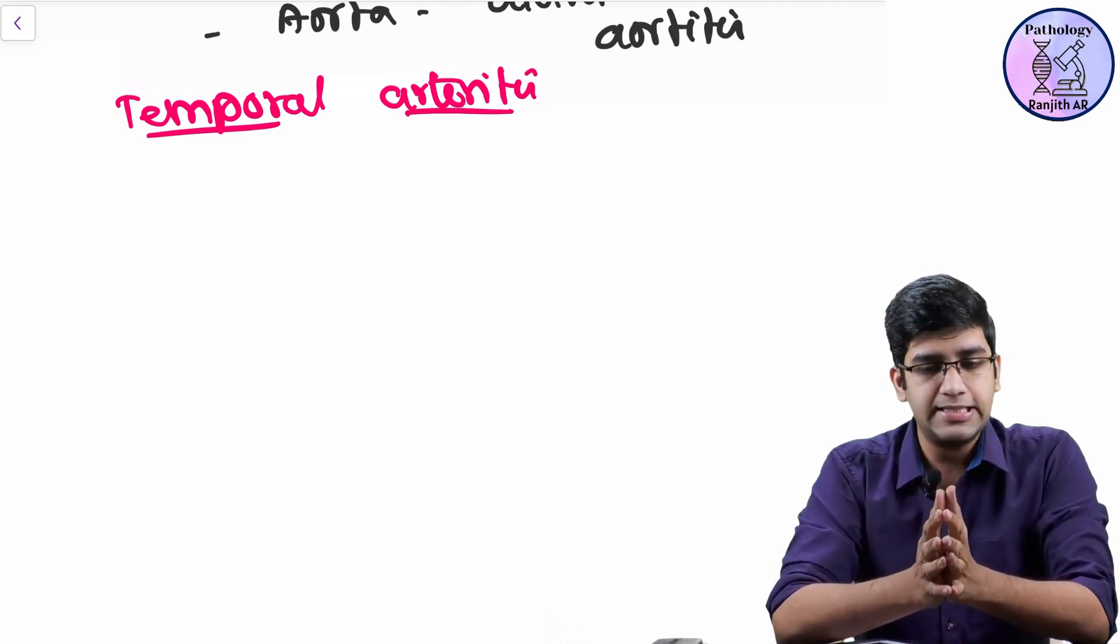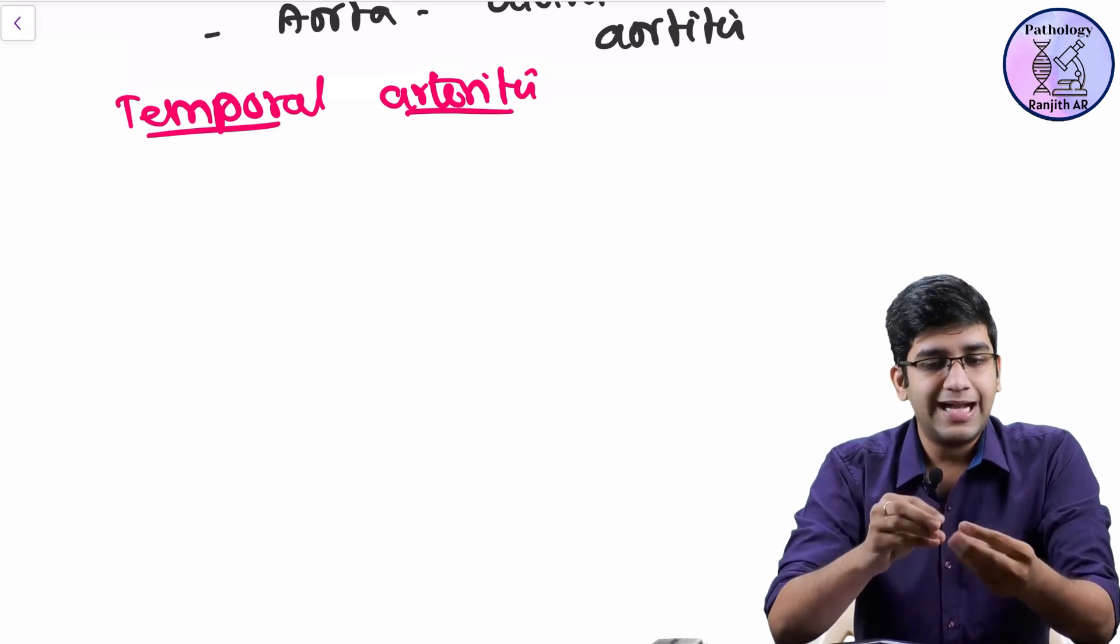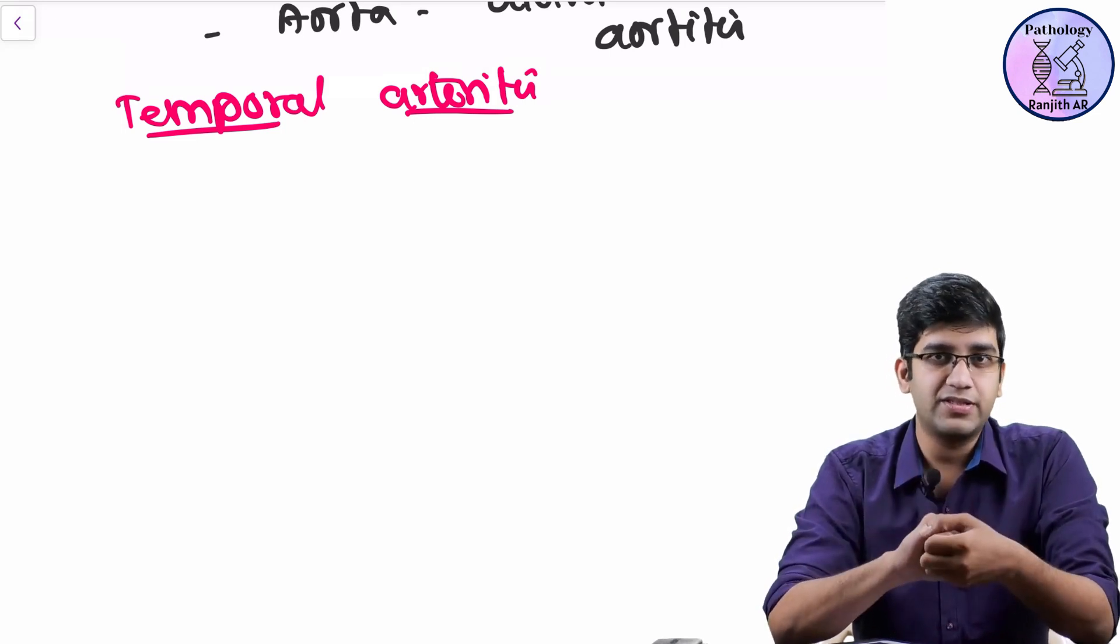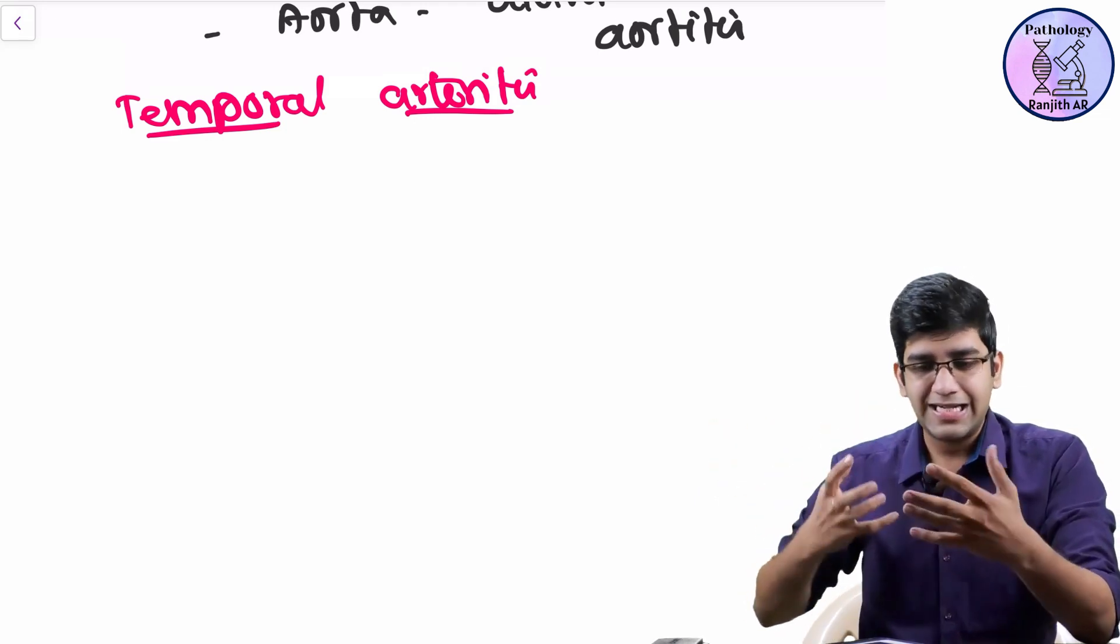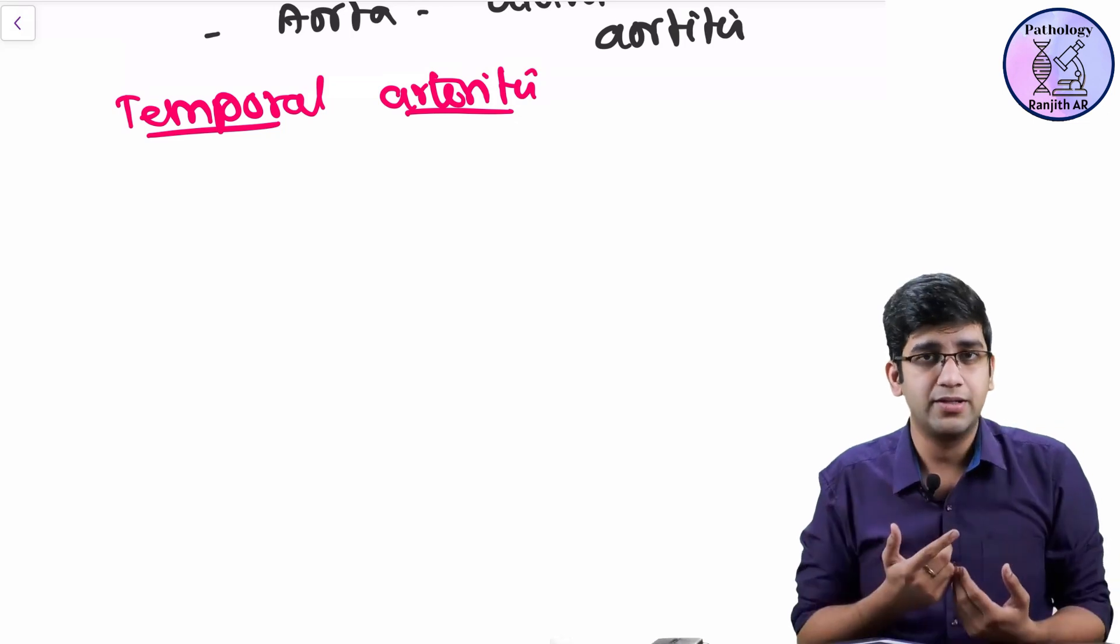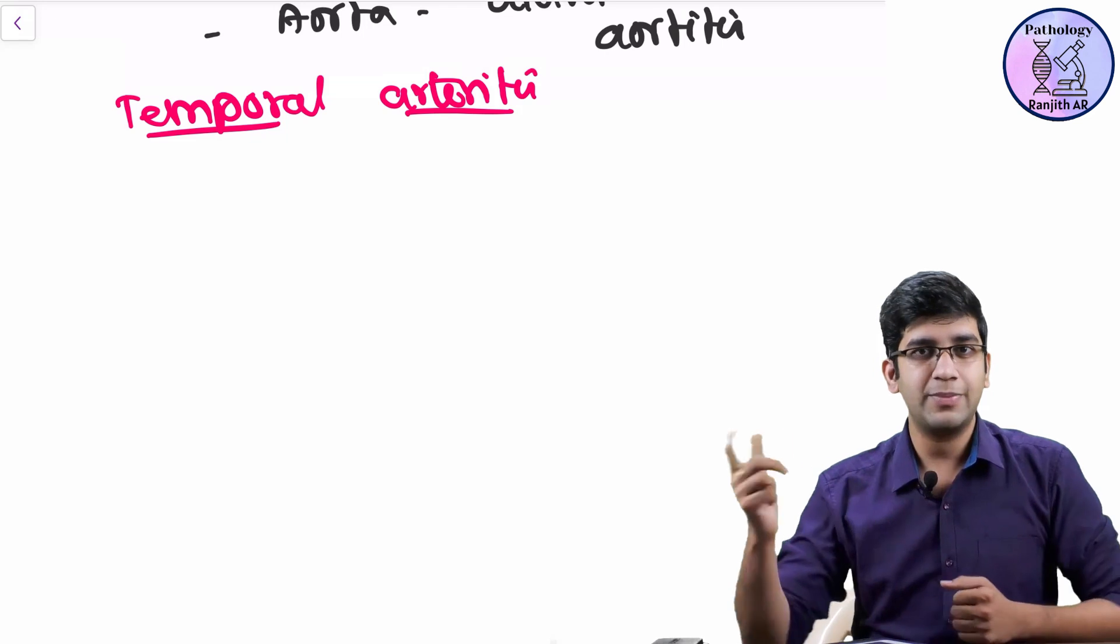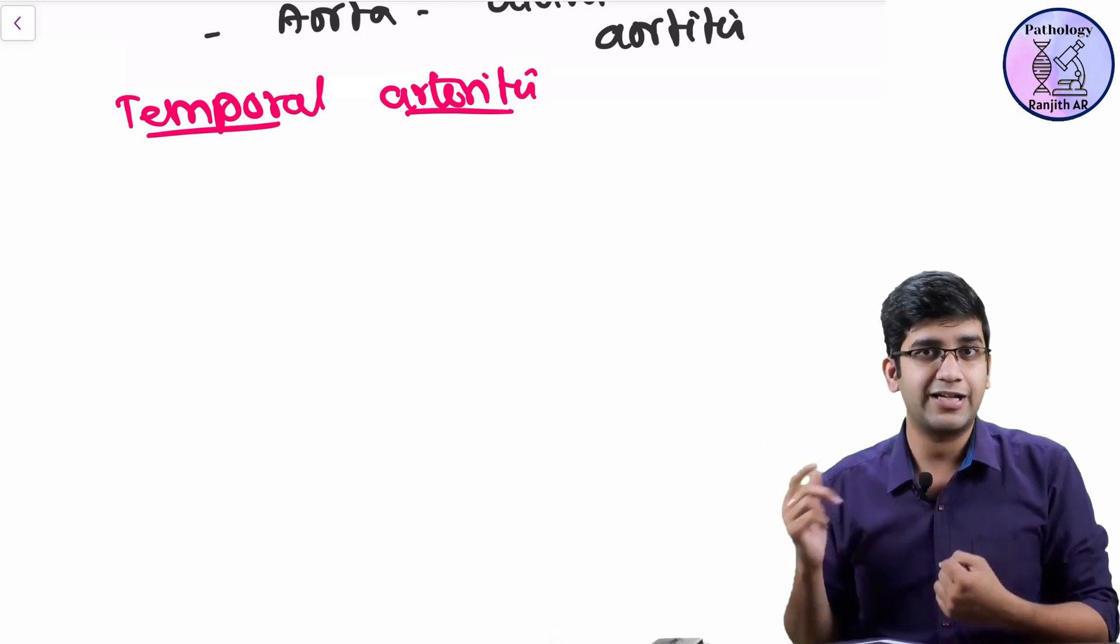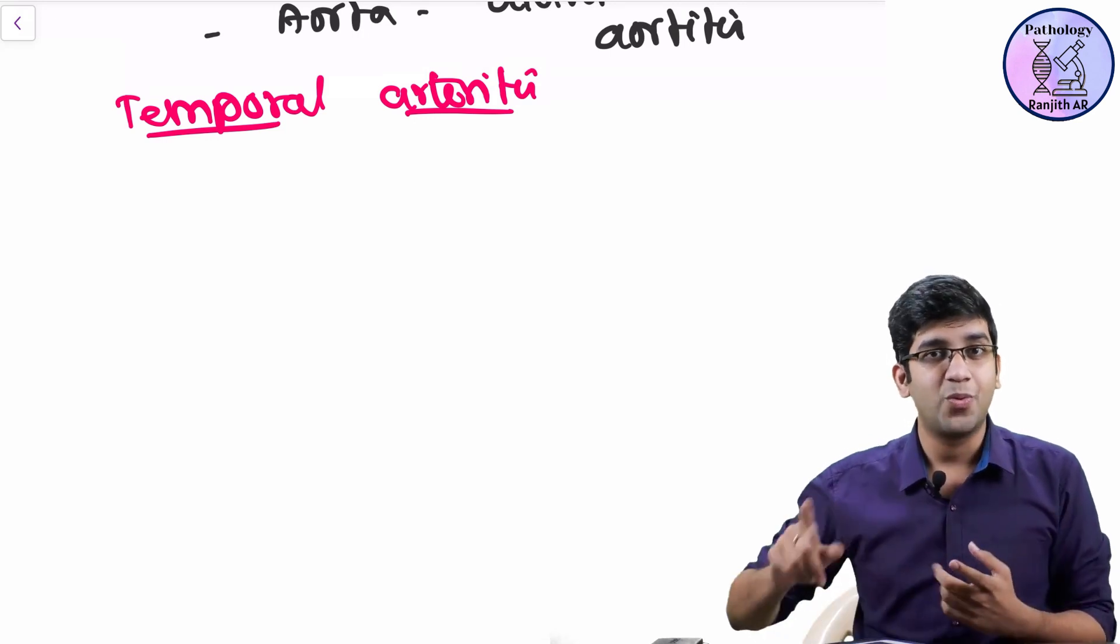Let's start. So it's temporal arteritis or giant cell arteritis. Let's go to the pathogenesis. The pathogenesis states that I have some unidentified vascular antigen that has been picked up by my antigen presenting cell. It causes damage, so my antigen presenting cell, due to some problem, considers this antigen as foreign. It takes it and presents to my CD4 cells. What will my CD4 cell do?